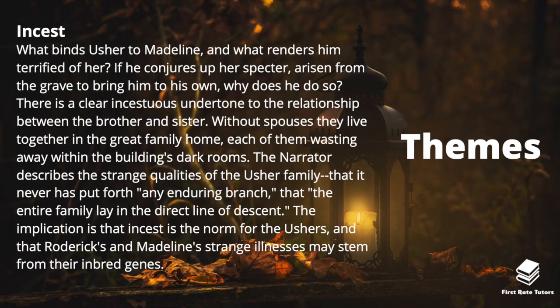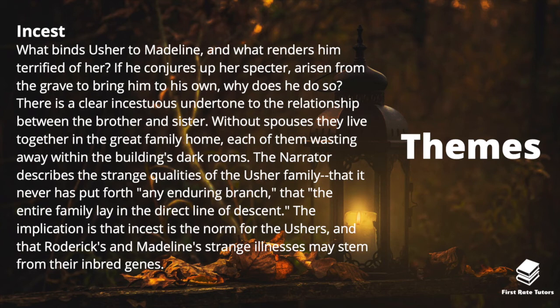The other important theme is incest. What binds Usher to Madeline — what renders him terrified of her? There is a clear incestuous undertone to the relationship between brother and sister. Without spouses, they live together in the great family home, each wasting away in its dark rooms. The narrator describes the strange quality of the Usher family: that it has 'never put forth any enduring branch' and that the entire family lay in the direct line of descent. The implication is that incest is the norm for the Usher family and that their strange illnesses may stem from inbred genes.